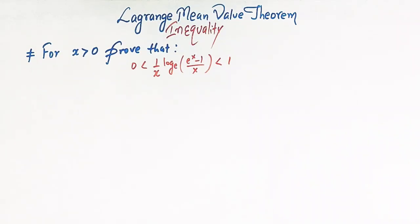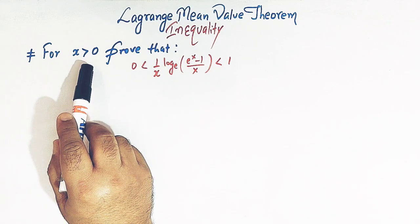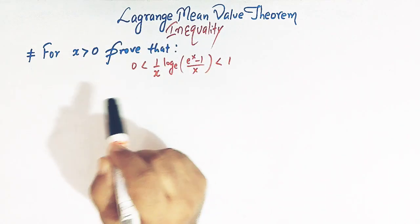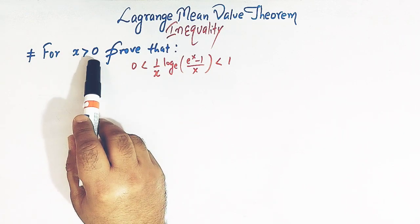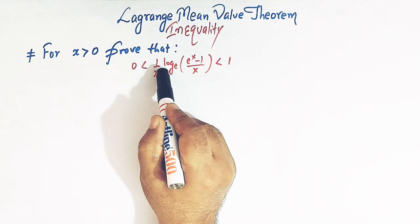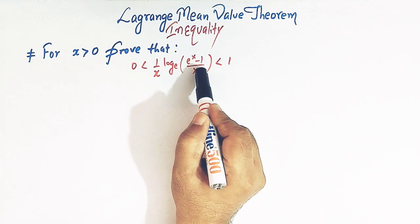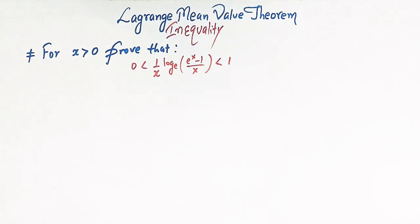Hello viewers. In today's class we are going to discuss another application of Lagrange's mean value theorem. In this lecture we'll prove this important inequality for x greater than 0. Using Lagrange's mean value theorem, we'll prove that for x greater than 0, we have the inequality: 0 < (1/x) · log((eˣ - 1)/x) < 1.